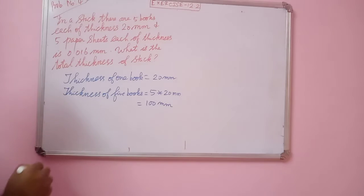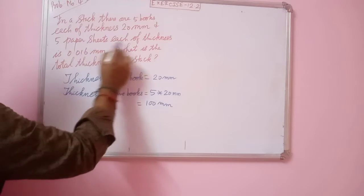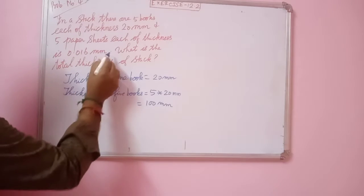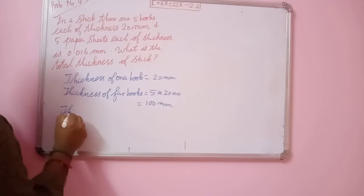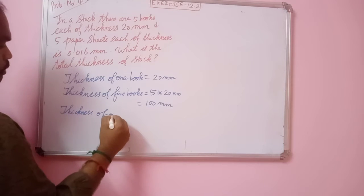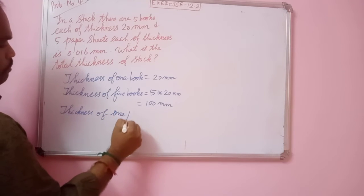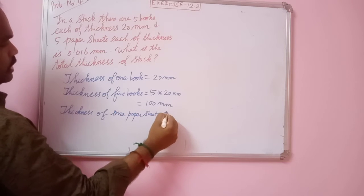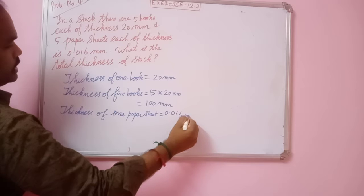The next one. 5 paper sheets, each of thickness is 0.016 mm. So, thickness of each paper sheet, that is, 1 paper sheet, is how much? 0.016 mm.